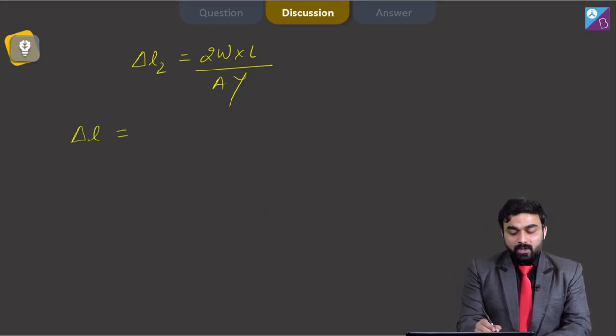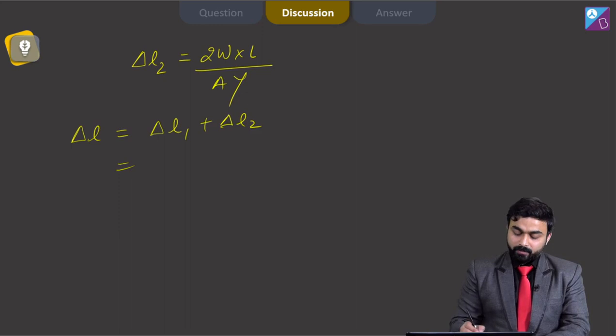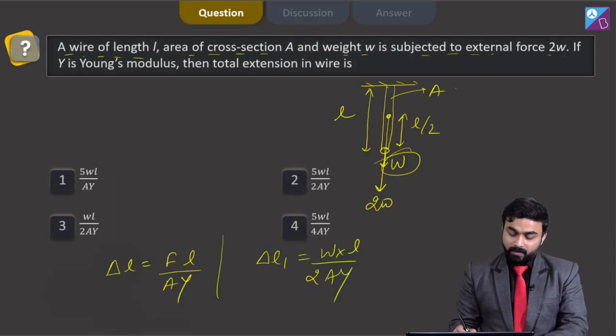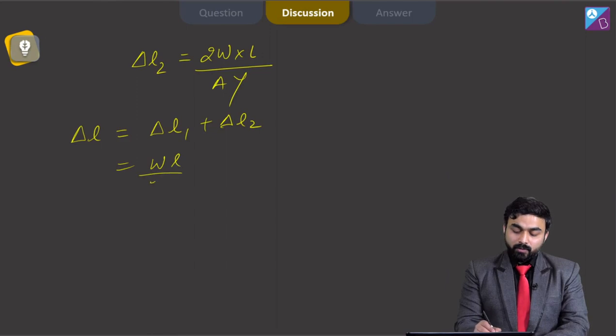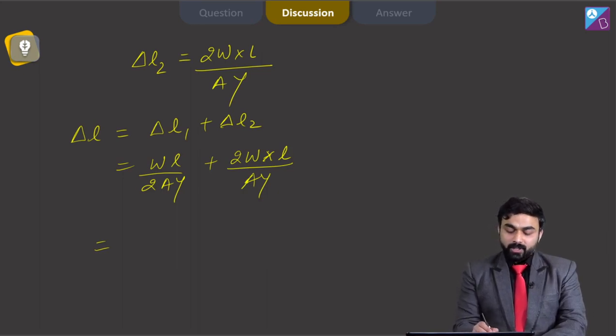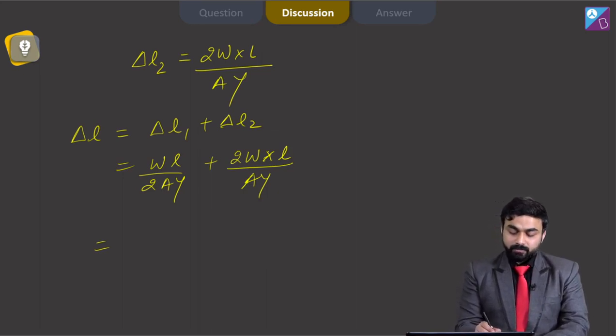To calculate total elongation, delta L1 plus delta L2, we can use. Delta L1 is WL over 2AY plus 2W into L over AY. So this would be 5WL over 2AY.